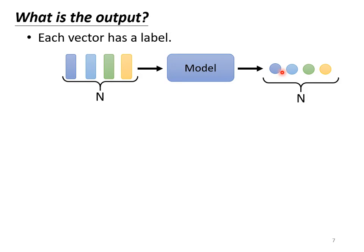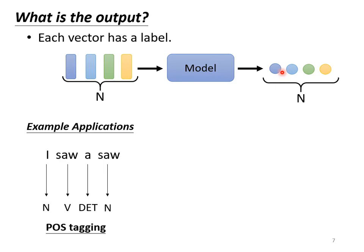What kind of applications use the first type of output? For example, in word processing, suppose you are doing POS tagging — part of speech tagging. You have to let the machine automatically decide the part of speech of each word, whether it is a noun, verb, adjective, etc. This task is not easy. For example, consider the sentence 'I saw a saw.' The machine should know the first 'saw' is a verb and the second 'saw' — though spelled the same — is a noun referring to a cutting tool. Every input word must have a corresponding output part of speech. This task is the case where the length of input and output are the same.